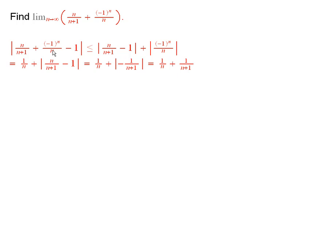So, take the absolute value of the difference between 1 and this expression. There it is. By the triangle inequality, this is smaller than or equal to absolute value of n over n plus 1 minus 1 plus absolute value of this.